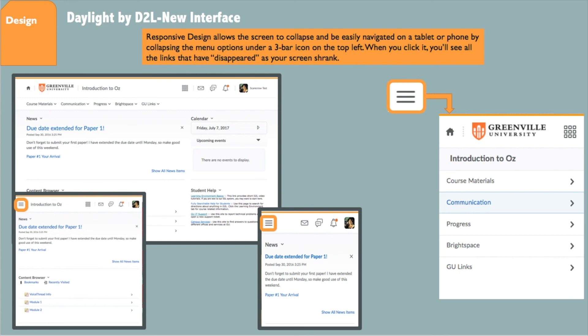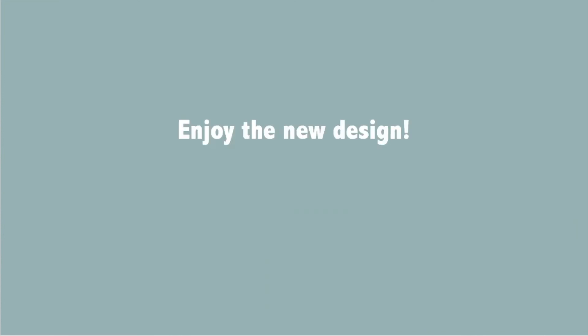The smallest view simulates a cell phone screen, again with the three-bar menu. On the right side of the screen, you can see the tools and options that you have when you click on that to expand it.